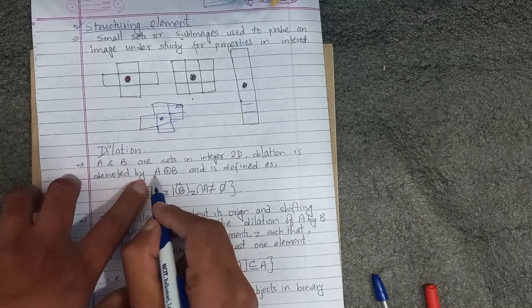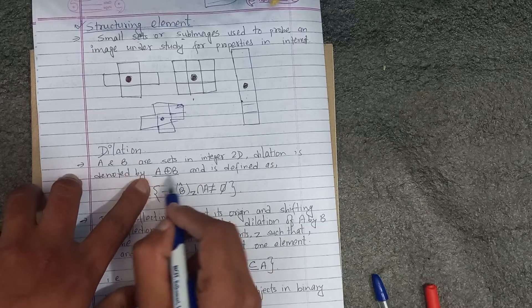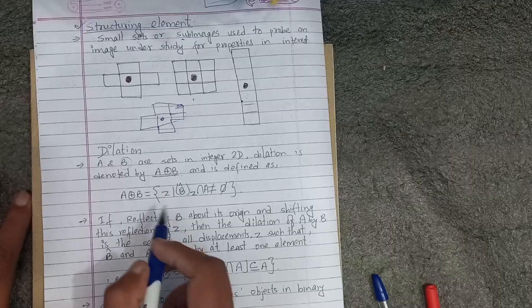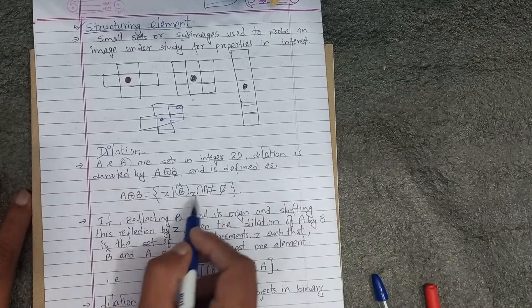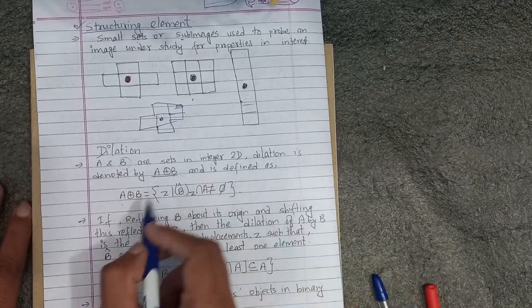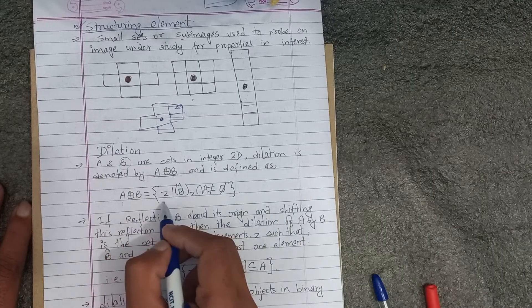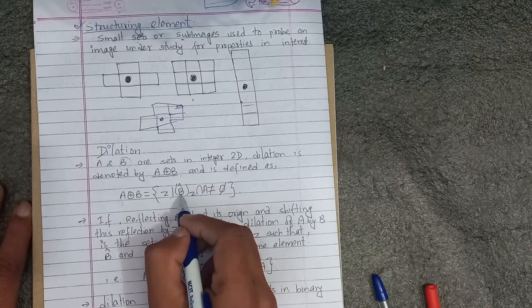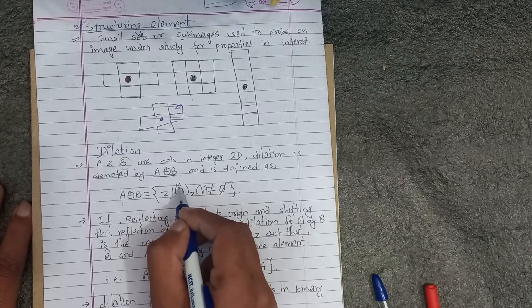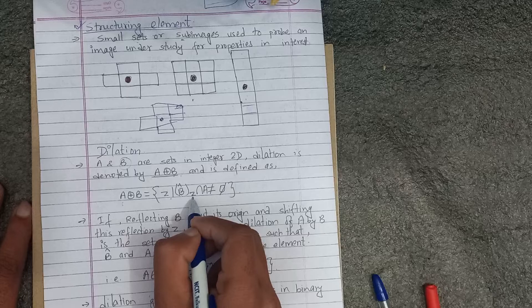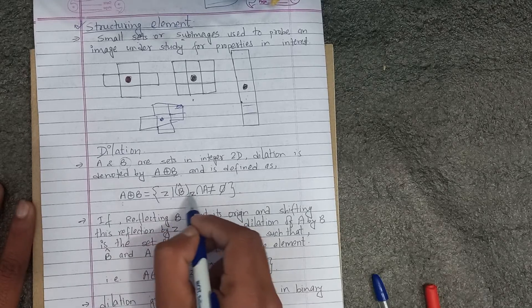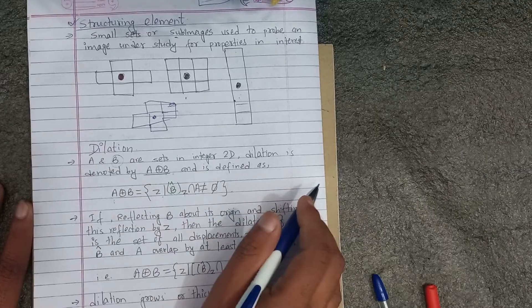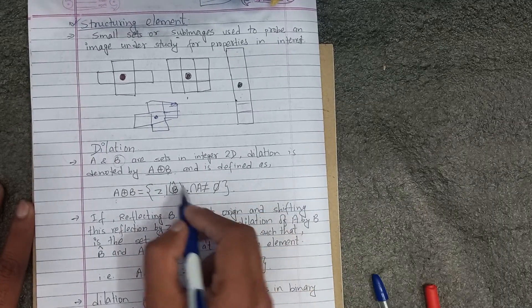In dilation, A plus circle plus B. What is B? What is structuring element? How do we define this? This is important. A plus B equals to set of Z such elements such that B is reflected. Reflected B is translated by Z. Intersection A have no elements, empty elements. How do we define this dilation?